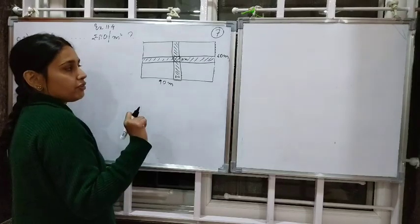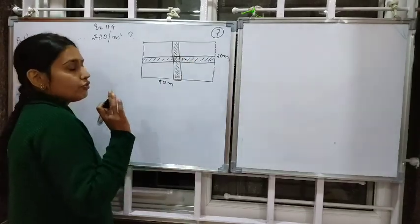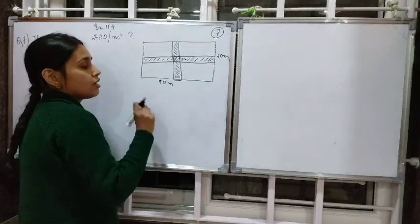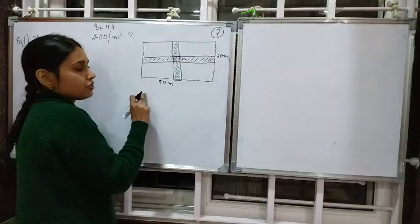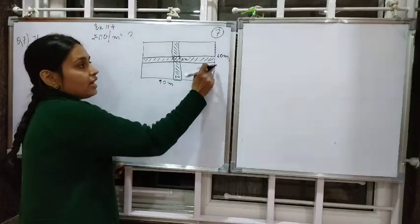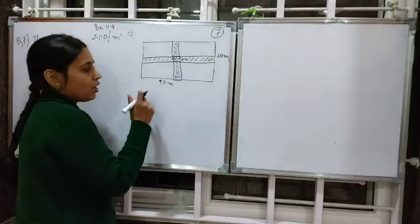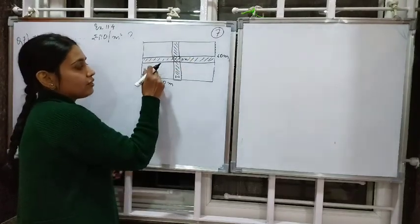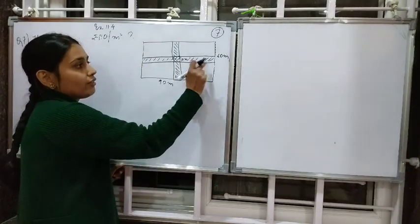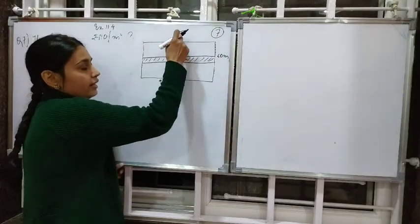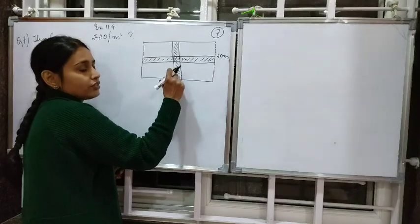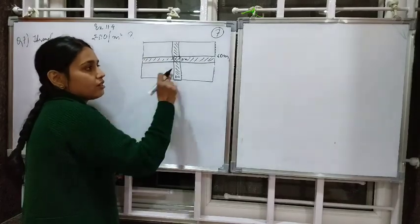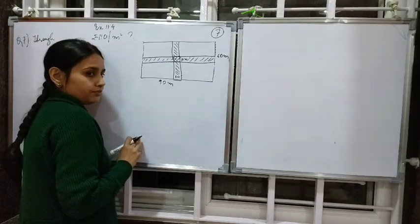We don't need to find the area of the field itself — only the area of the two roads. The reason the field dimensions 90m and 60m are given is that these roads are parallel to the sides of the field, so if the field length is 90m, the road parallel to it is also 90m, and similarly the road parallel to the breadth is 60m.